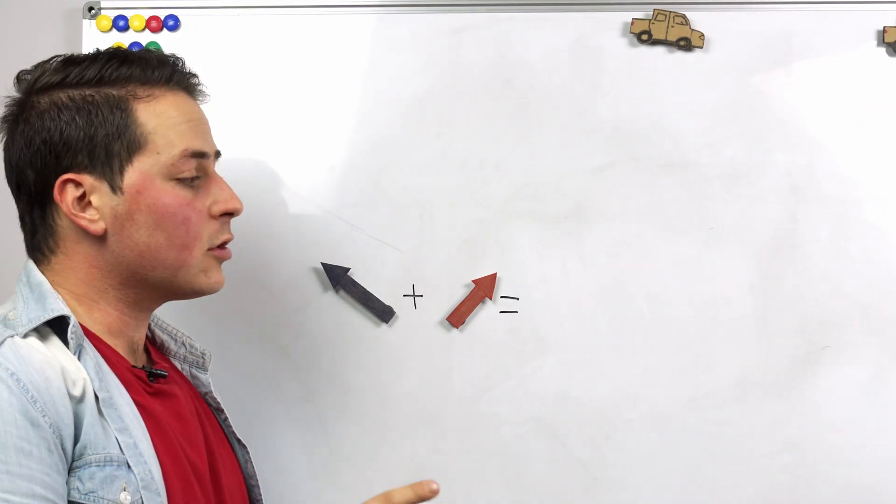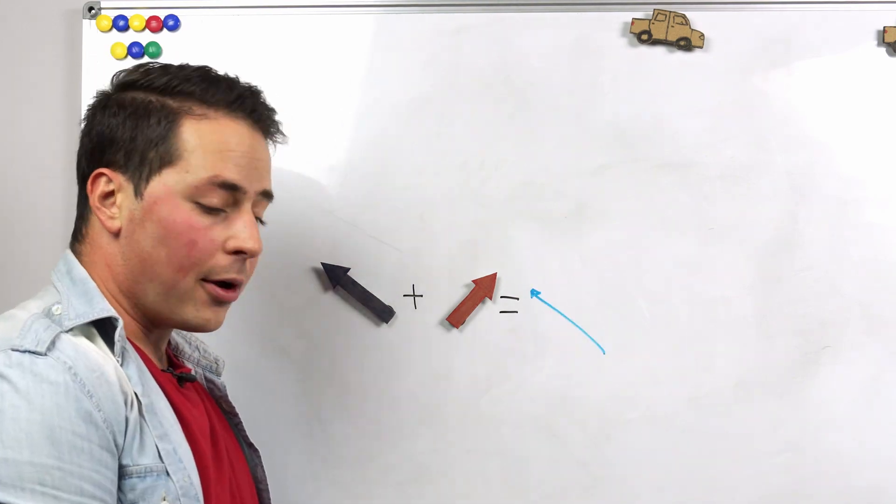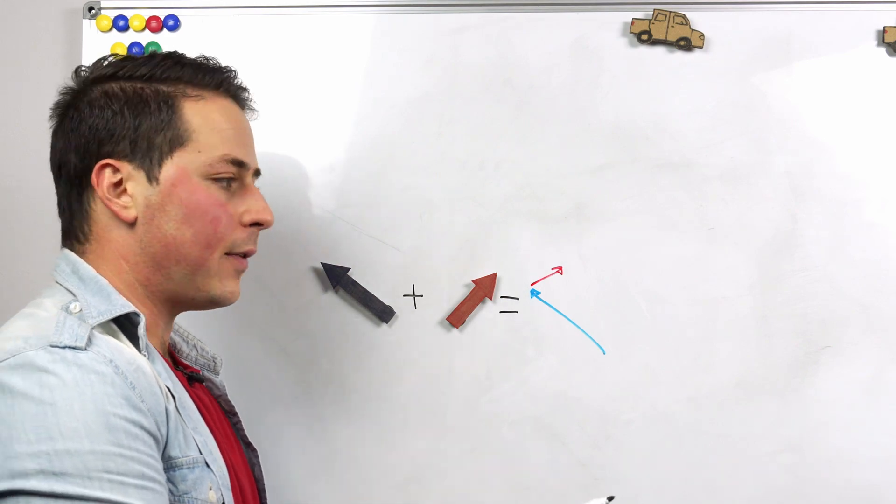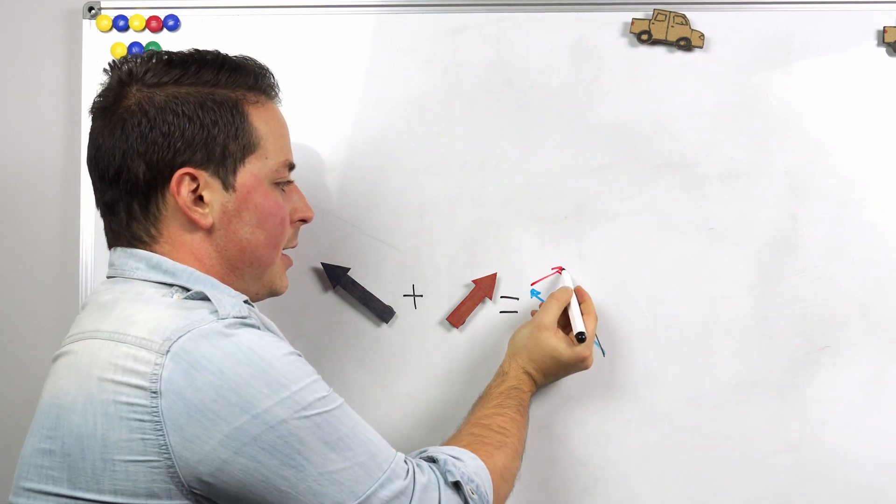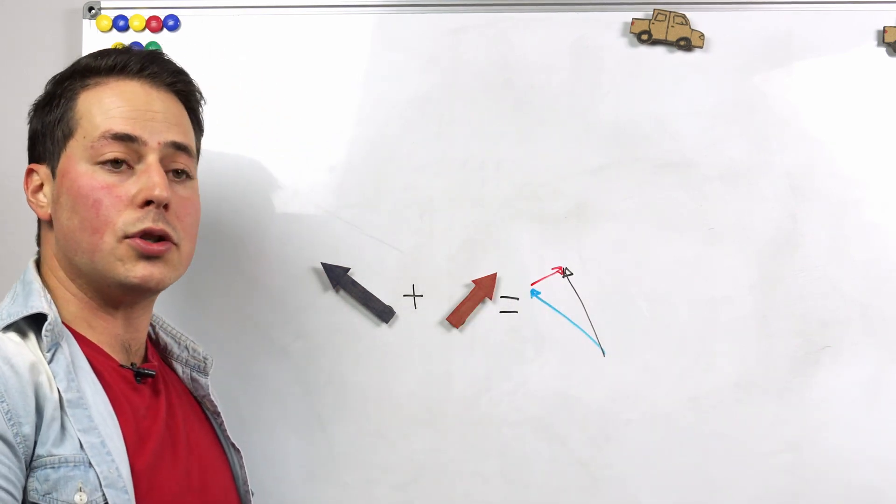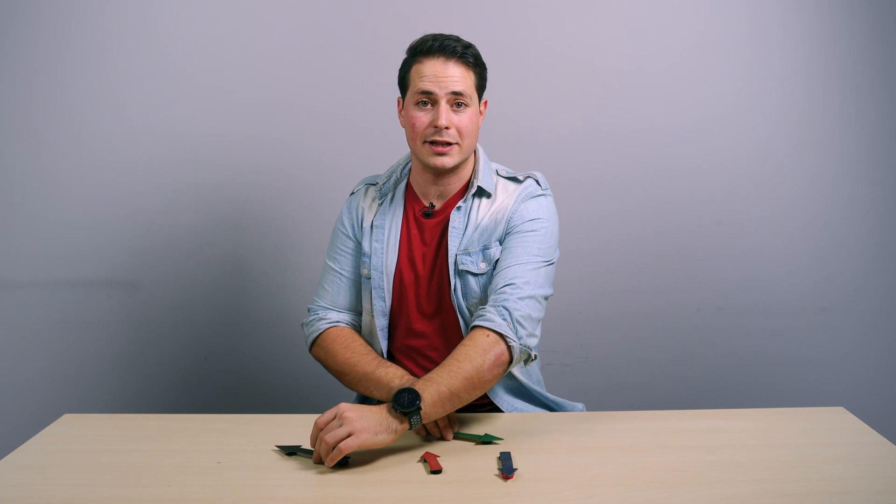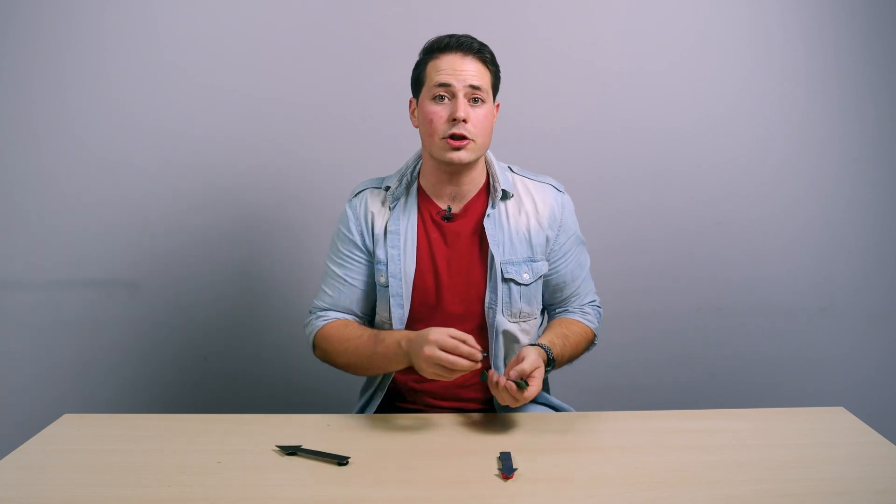But if the vectors don't fall in a line, the result of summing these two vectors together will be another vector with a completely different direction and magnitude to any of the ones involved. One important detail about vector addition is that it's both commutative and also associative.